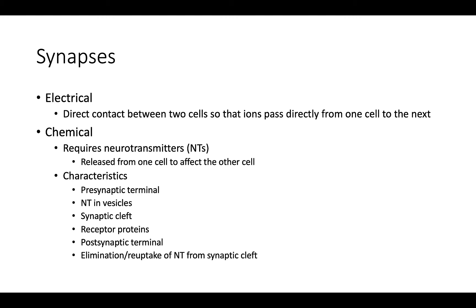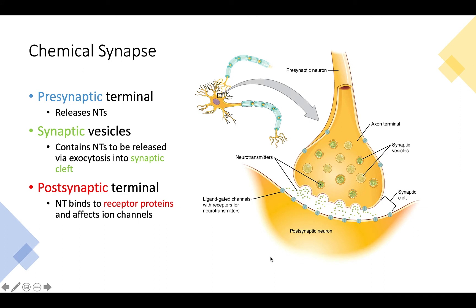We'll focus on chemical synapses, which release neurotransmitters from a presynaptic neuron to a postsynaptic neuron. Characteristics of chemical synapses include: a presynaptic terminal at the end of the presynaptic neuron, neurotransmitters stored in vesicles, a synaptic cleft — the space between the synapse and the receptors — receptor proteins on the postsynaptic terminal, and elimination or reuptake of neurotransmitters from the synaptic cleft, carried out by astrocytes, enzymes, or the presynaptic neuron itself.